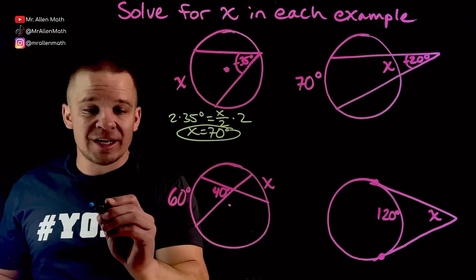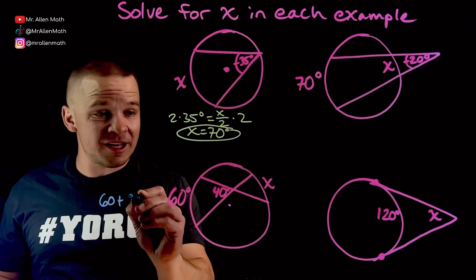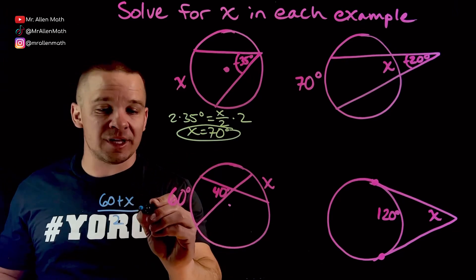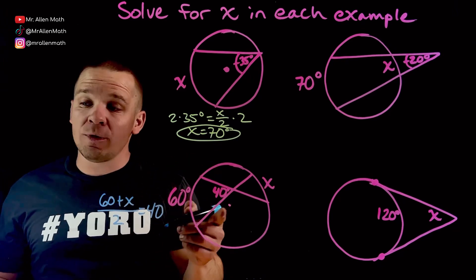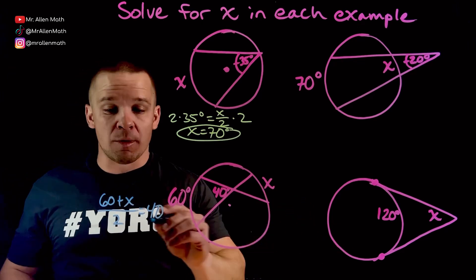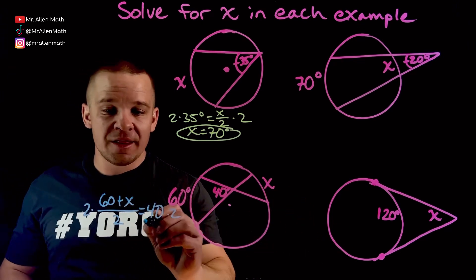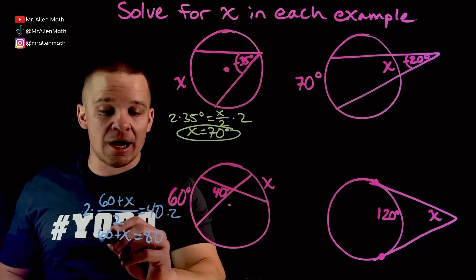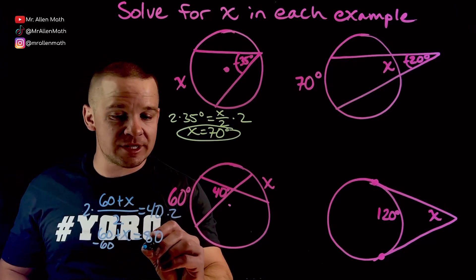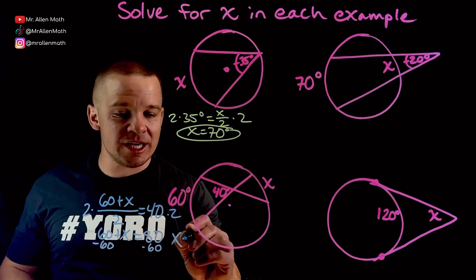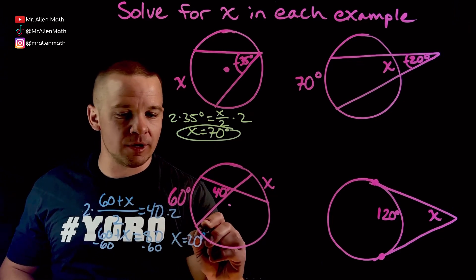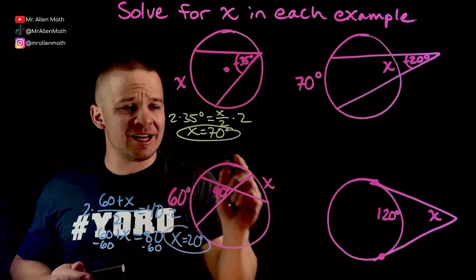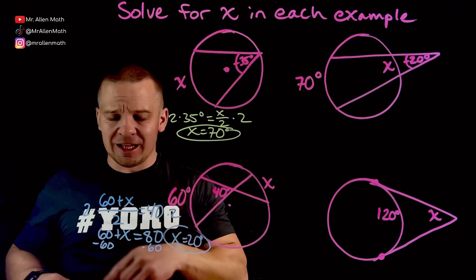So I'm going to have 60 plus X over 2. That is equal to my in angle, so that equals 40. Now, we can go ahead and solve this algebraically. So I'm going to multiply by 2 on both sides, that's going to give me 60 plus X equals 80. And now I'll subtract 60 on both sides, and I've got X equals 20 degrees. Boom. Diggity. That is dope, dogs. Alright, 20 degrees for that one.